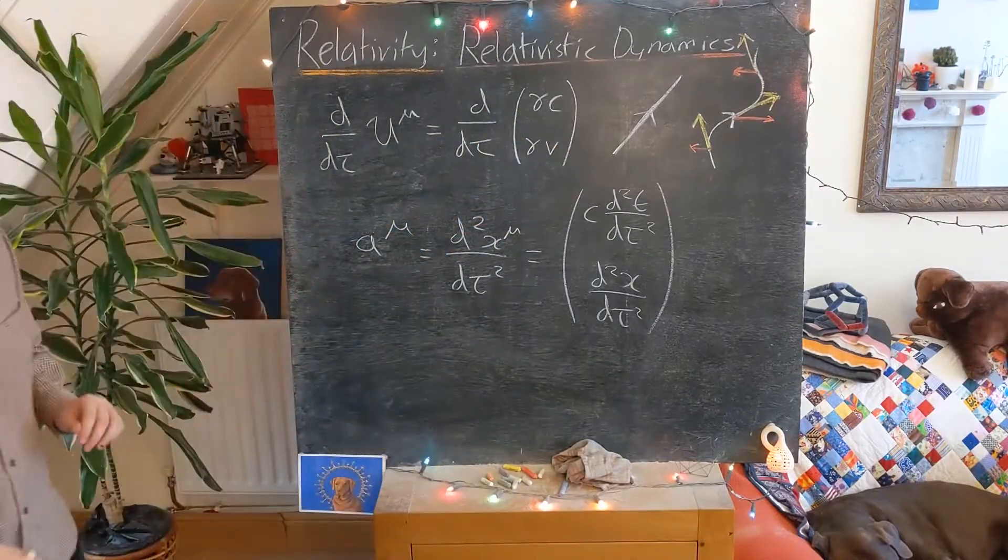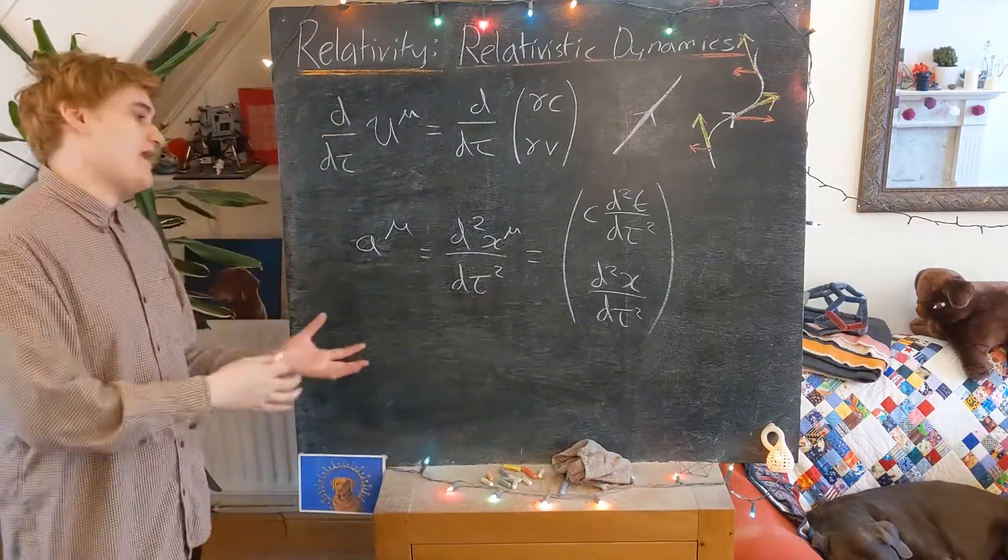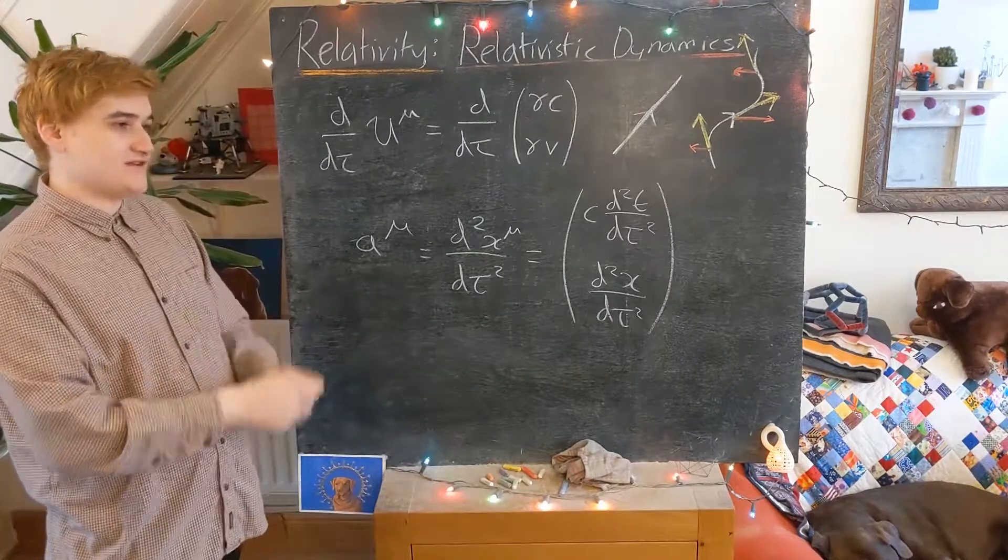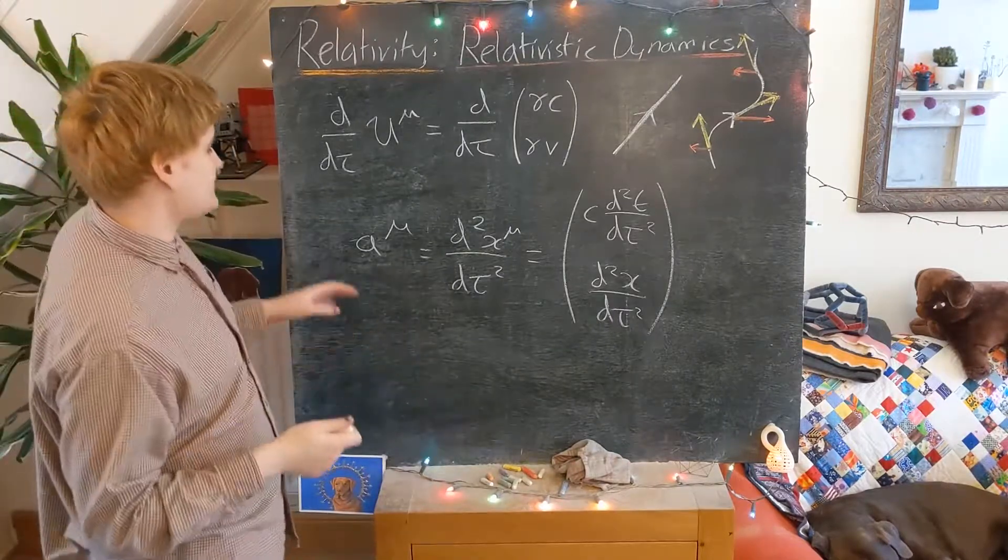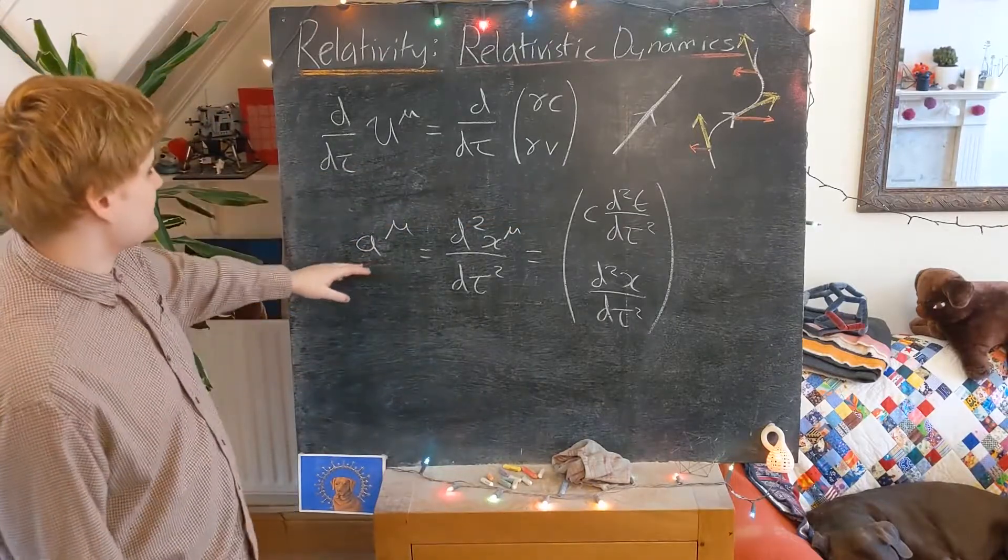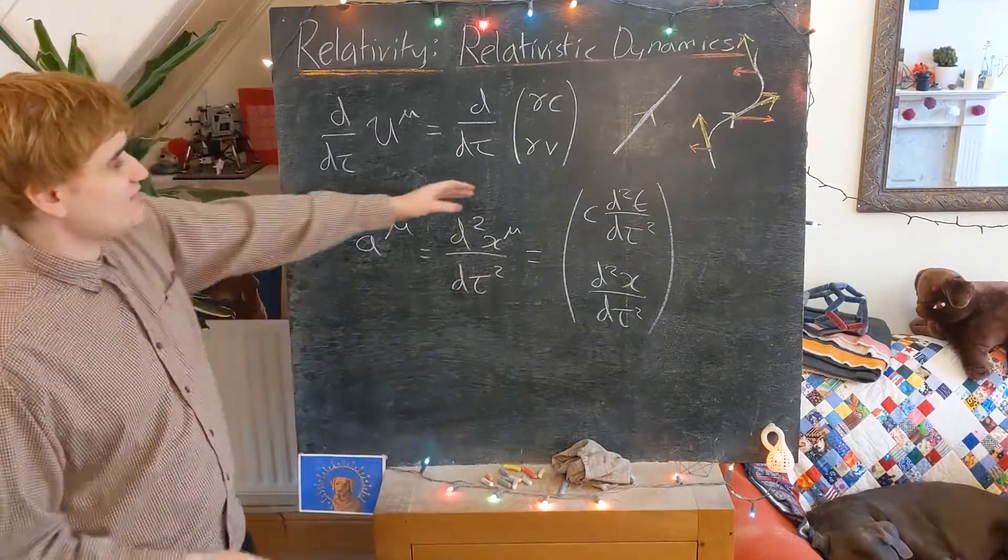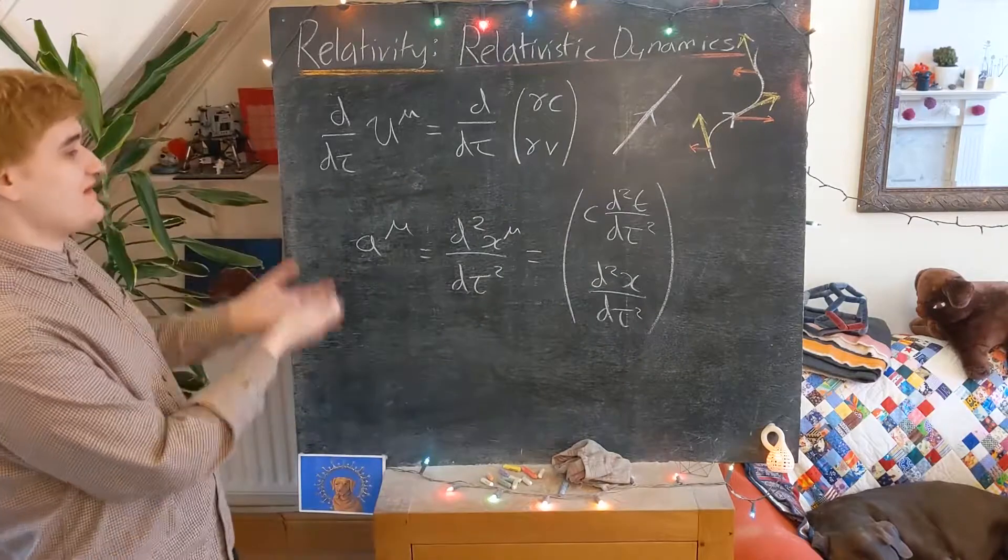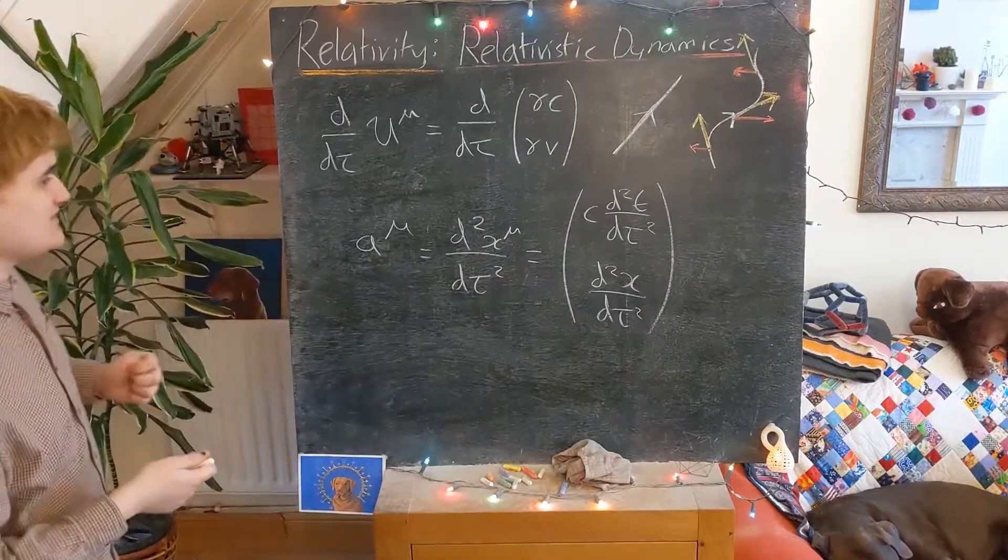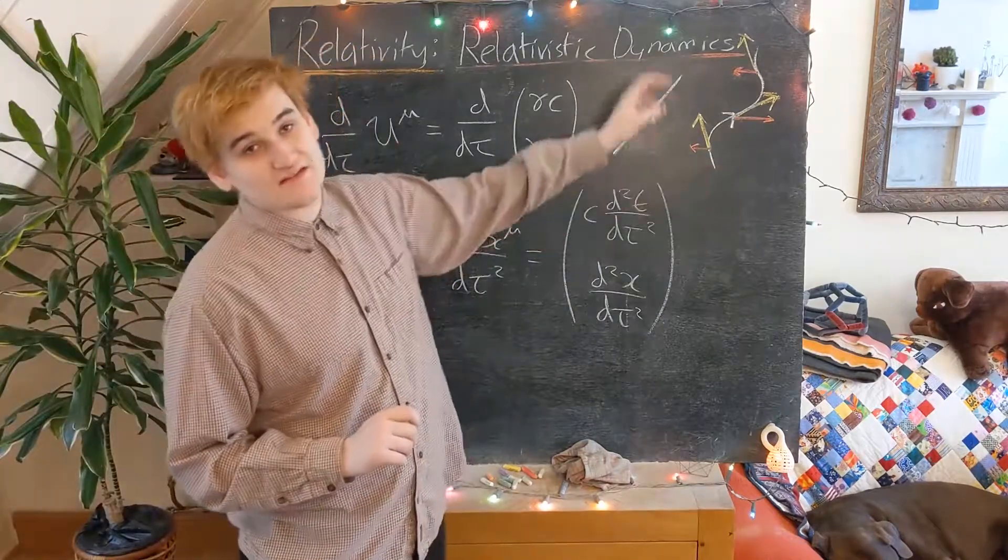But just the key thing to note or to realize is that if you're accelerating, you're then not an inertial observer. You can't be transformed into a stationary reference frame using a Lorentz transformation. And now one way to realize what an accelerated observer is, is it's essentially somebody who is being continuously boosted to higher and higher, or potentially lower velocities if they're decelerating. So that's just one kind of way that you can view an observer who is accelerating.